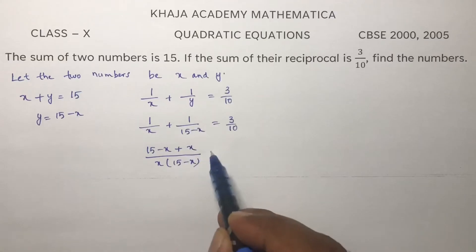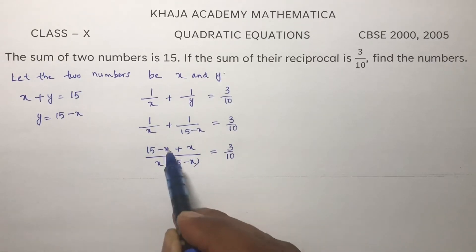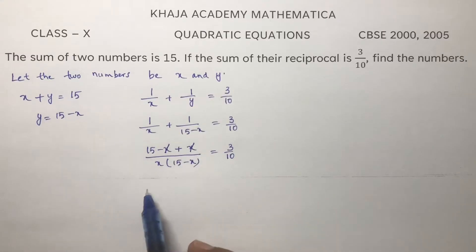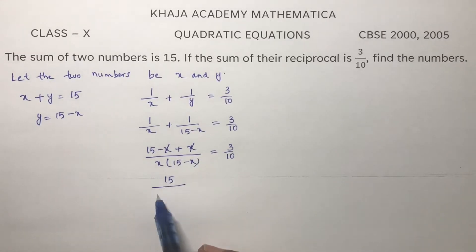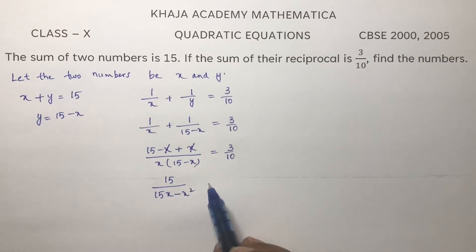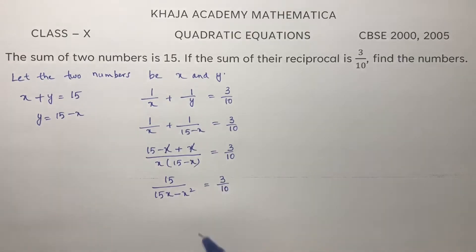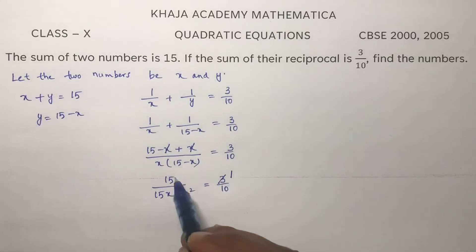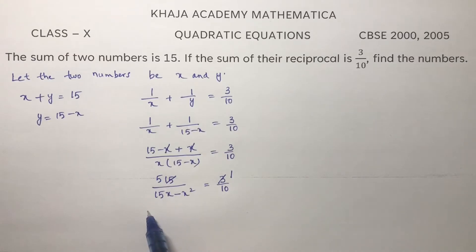Multiply here x; the minus x and plus x will get cancelled. So we get 15 by x into 15 minus x equals 3 by 10. If I multiply x into 15, we get 15x, and x into x is x squared equals 3 by 10. Now here, 3 times 1, 3 times 5. Cross multiply: 5 into 10.